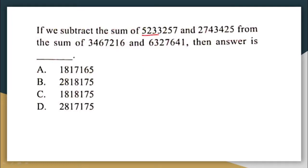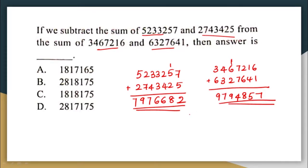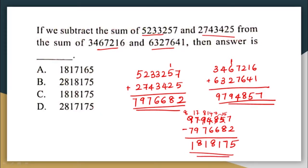We have to find the sum of the first two numbers, the sum of the second two numbers, and then subtract the answers. We find 52,33,257 plus 27,43,425 to get the first sum. Similarly, we find the sum of the next two numbers. The difference between those two sums gives us 18,18,175, which is option C.